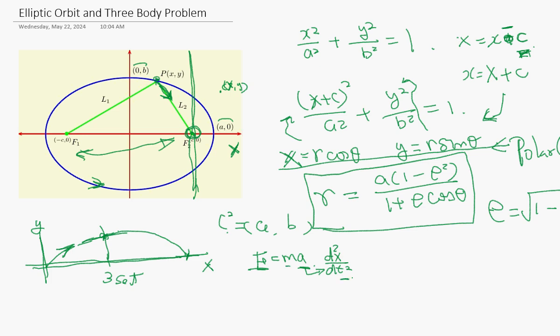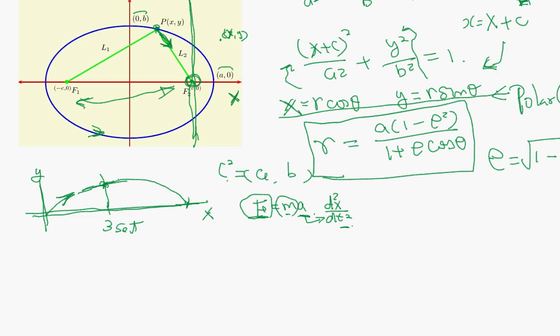So what we have to do is find out what the force F is. In this situation there are two components. One is gravity in the radial direction r. The centripetal acceleration is v² / r, and the velocity v is the orthogonal component, which is r times the angular speed. So this radial acceleration is r·θ̇².